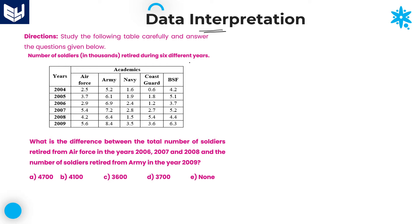First of all, read the information given in the question. The information is about the number of soldiers retired during 6 different years. Each value given in brackets is in terms of thousands. The time period is 2004 to 2009, and the branches are Air Force, Army, Navy, Coast Guard, and BSF — 5 different branches.